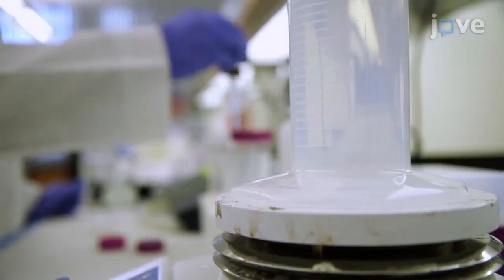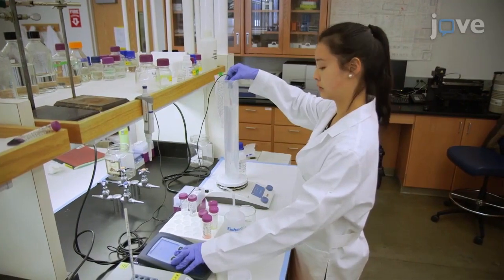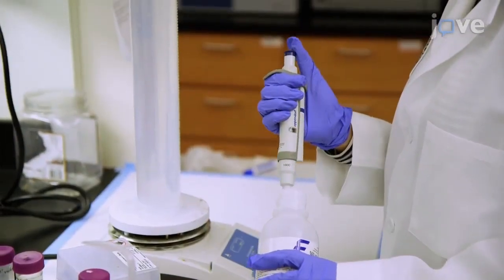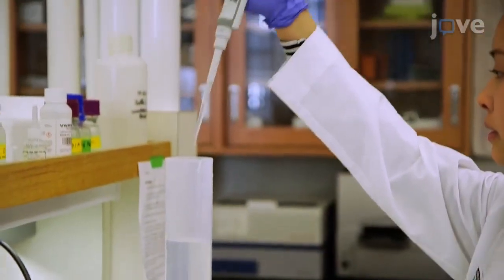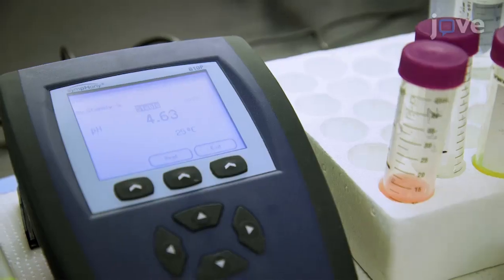When the anhydrous sodium acetate is completely dissolved, use a calibrated pH meter to measure the pH of the solution. Use a pipette to add 1 molar hydrochloric acid or sodium hydroxide accordingly to obtain the desired pH at 4.6.